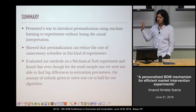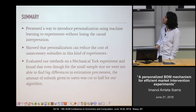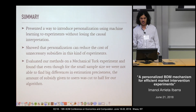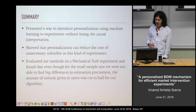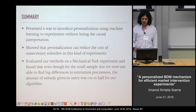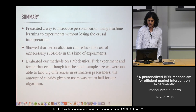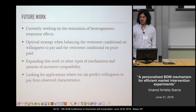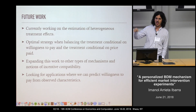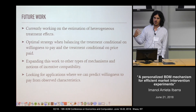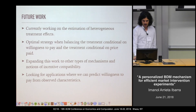To summarize, we presented a way to introduce personalization using machine learning to run experiments without losing causal interpretation. We've shown that personalization can reduce the unnecessary costs and subsidies in these kinds of experiments. We evaluated our methods on Mechanical Turk and found that even with a small sample size and weak covariate signal, our mechanism still performed better than the classical BDM mechanism. We are currently working on the second type of randomization — how prices are assigned conditional on willingness to pay and being treated — and looking for other applications where predicting willingness to pay is more tractable.